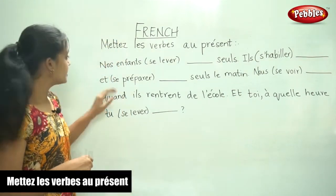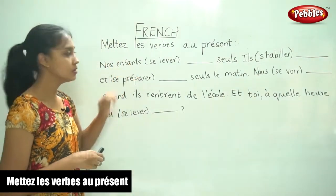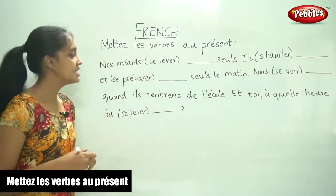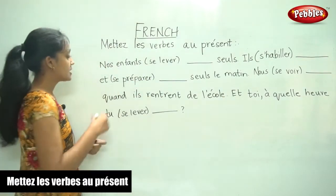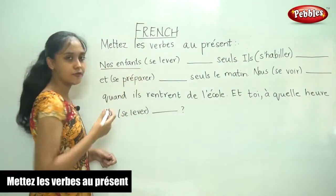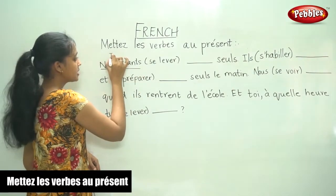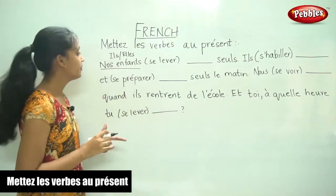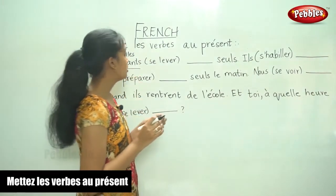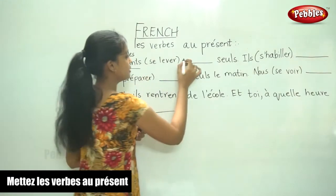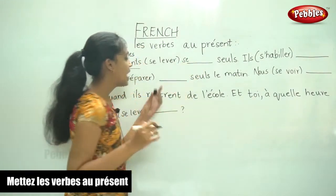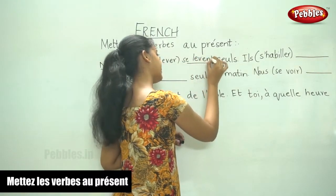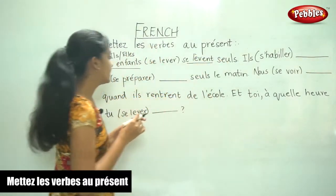The next part of that exercise: nos enfants, and the verb given is se lever. Now, the subject is nos enfants, so it is ils or elles. For ils or elles, se remains the same and the conjugation of lever is lève — se lève.